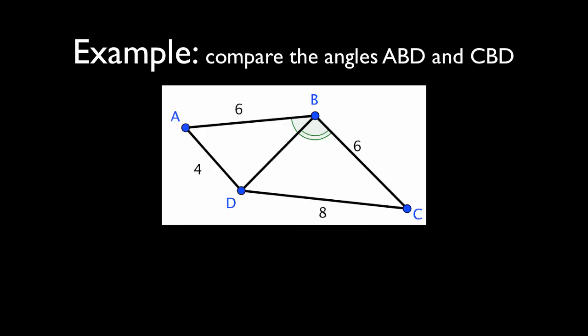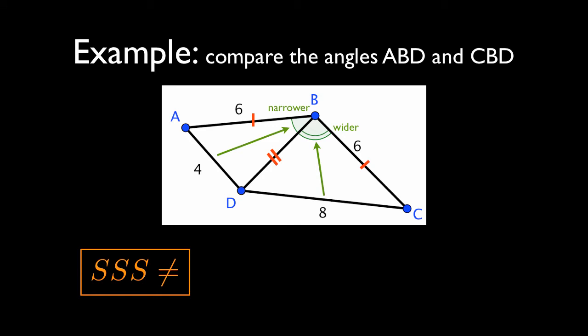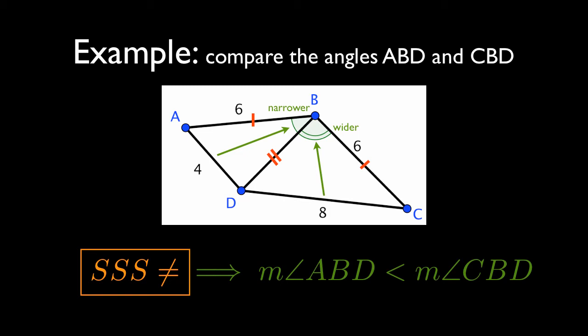Here's another example: compare angles ABD and CBD. We have a pair of congruent sides, a shared side BD, and we notice that 4 is clearly less than 8. Therefore the angle opposite 4 must be smaller than the angle opposite 8. By the SSS Inequality — because we know information about all three sides and are making a conclusion about the angles — we conclude that the measure of angle ABD is less than the measure of angle CBD.